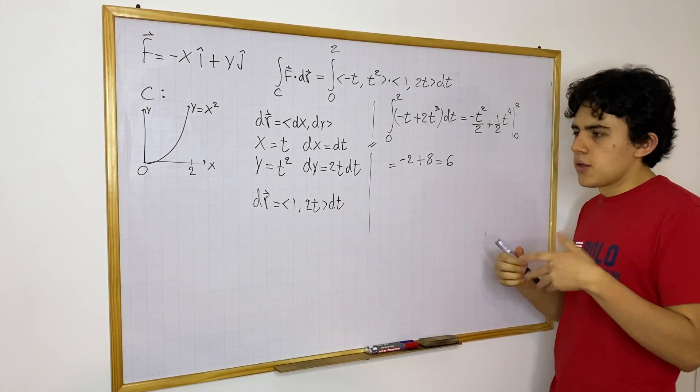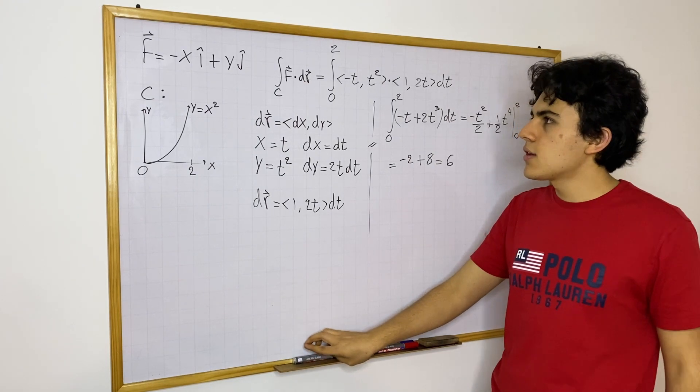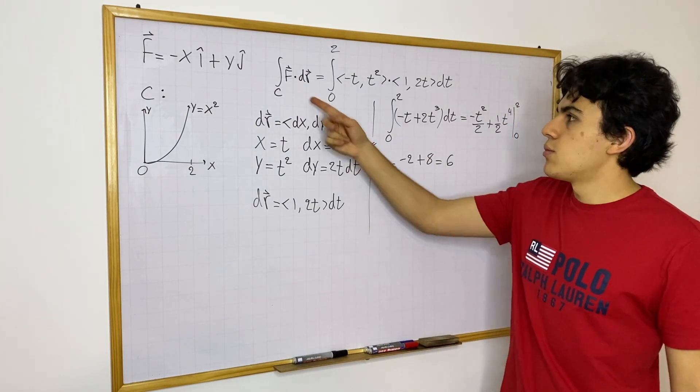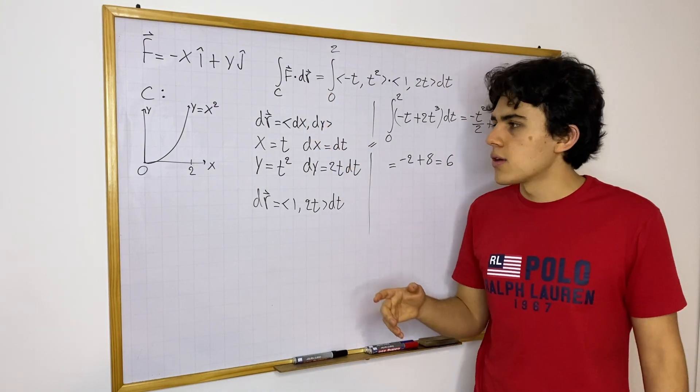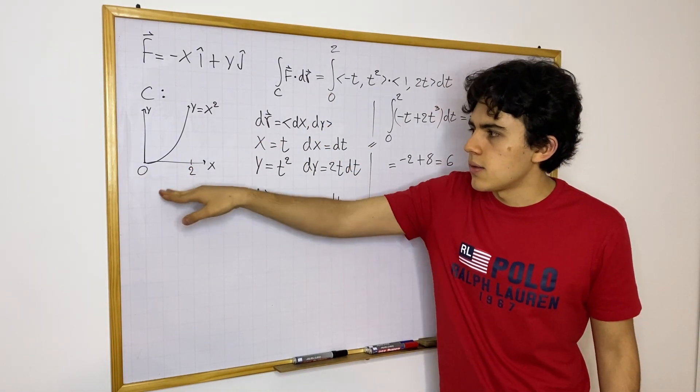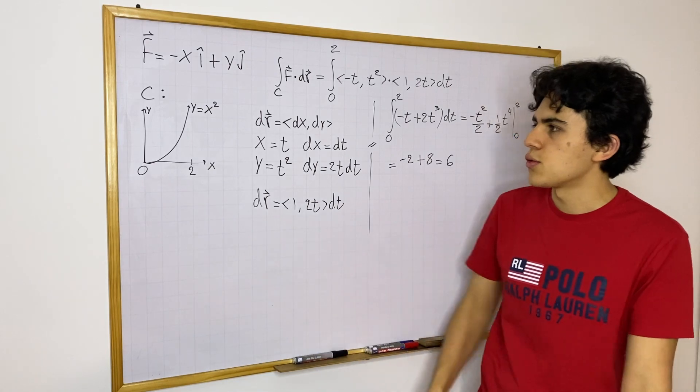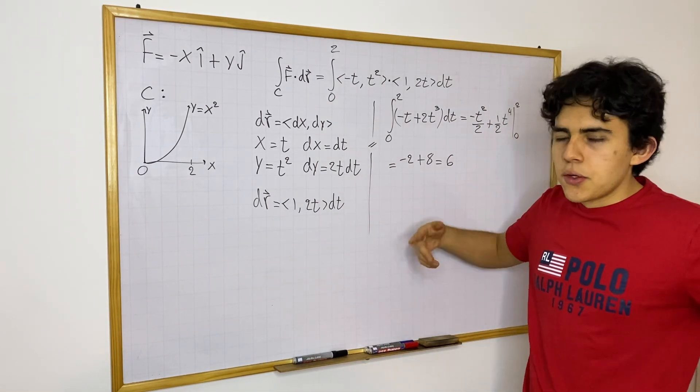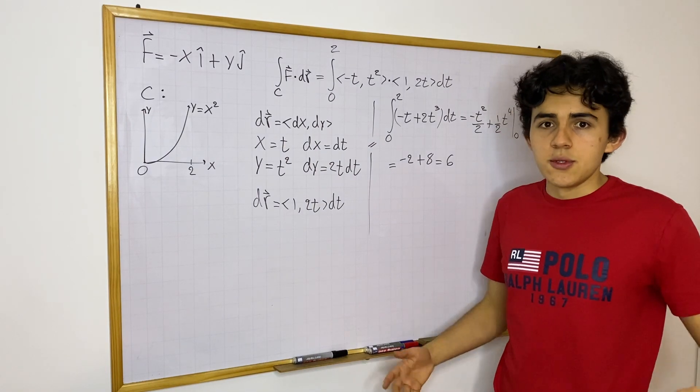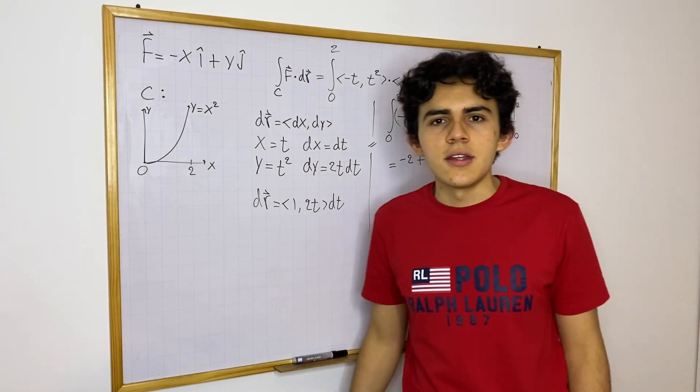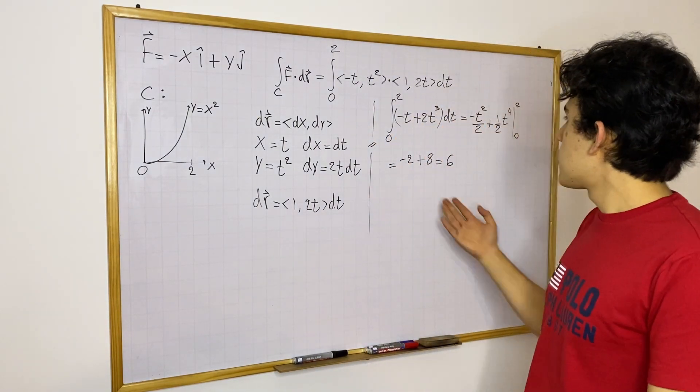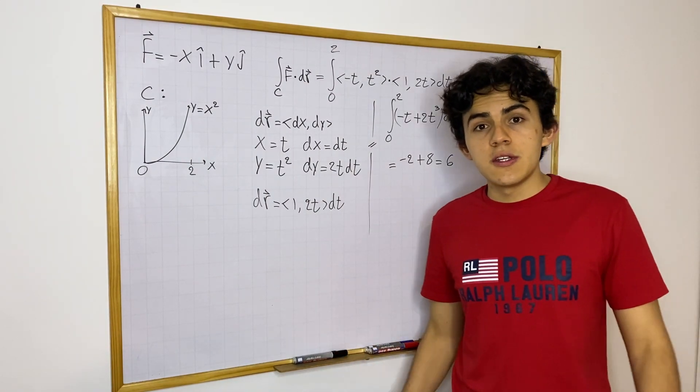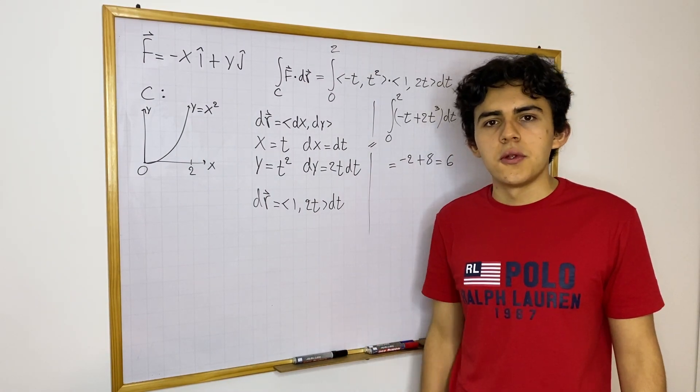And 6, well, depending on what type of problem you're doing, would have different units. Let's say you're doing physics, this would be joules, because you're finding the work done along this curve. If this is physics, this would have a unit of joules. Right now we're doing math, so we're just going to forget about joules and units. Math doesn't need units. And that's how you can find a line integral. So hopefully you enjoyed this video, hopefully you learned something, and see you in the following one.